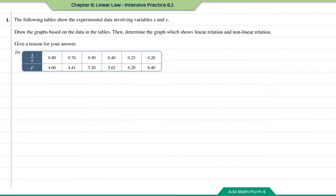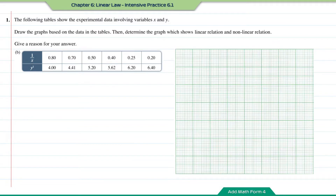For question b, based on the data we're going to plot the graph of y² against 1/x. For the 1/x axis we're going to use 2 cm to 0.1 unit, and for the y² axis we're going to use 2 cm to 1 unit. Now we're going to plot the scale first.